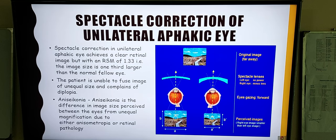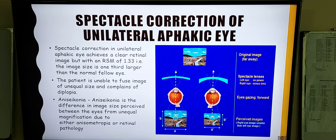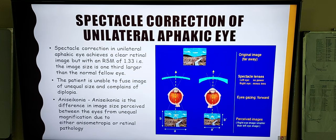The spectacle correction of a unilateral aphakic eye will achieve a clear retinal image, but there will be a relative spectacle magnification of 1.33 as discussed, and the image size is one third larger than the normal fellow eye. Therefore, aniseikonia is occurring, which is the difference in the image size perceived between the eyes. It can result from unequal magnification due to anisometropia or subretinal pathology. The patient is unable to fuse images of unequal size and complains of diplopia. Normally a magnification of 7% can be tolerated and fusion can occur, but if it is greater than that, fusion will not occur and the patient will complain of diplopia.